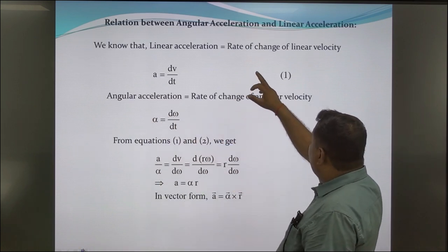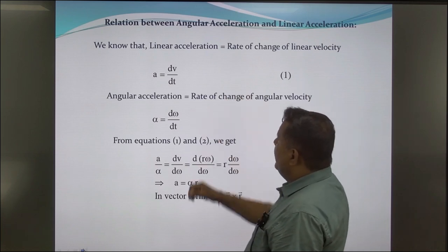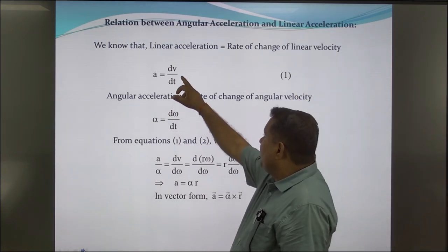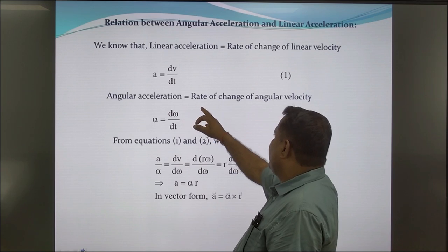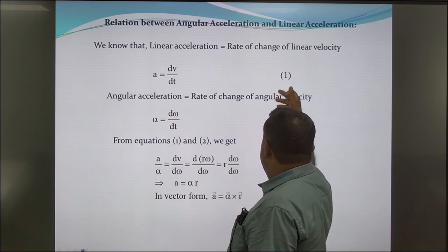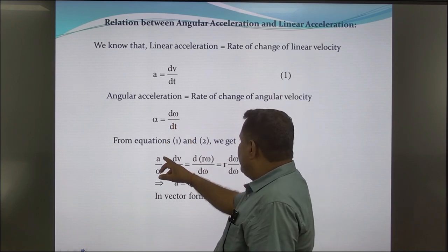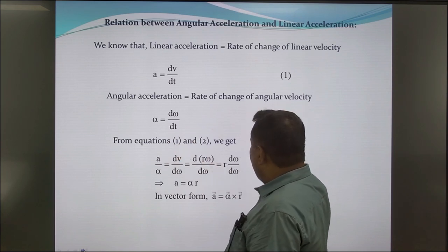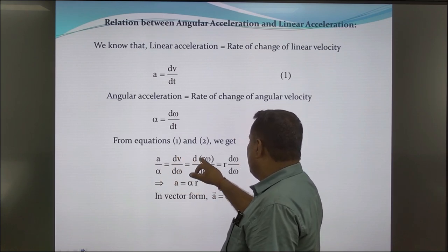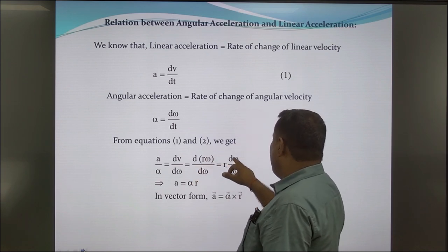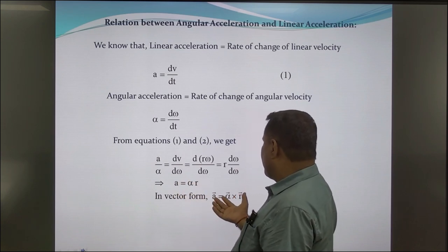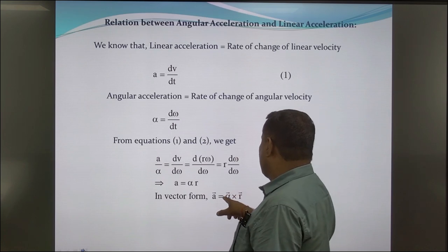Relation between angular acceleration and linear acceleration. We know that linear acceleration equals rate of change of linear velocity: a = dv/dt. Angular acceleration is defined as rate of change of angular velocity: α = dω/dt. From these two equations, we derive that a = αr. In vector notation, it is represented as a = α × r.